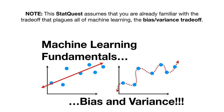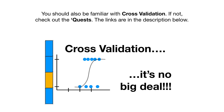This StatQuest assumes that you are already familiar with the trade-off that plagues all of machine learning: the bias-variance trade-off. You should also be familiar with cross-validation. If not, check out the Quests — the links are in the description below.